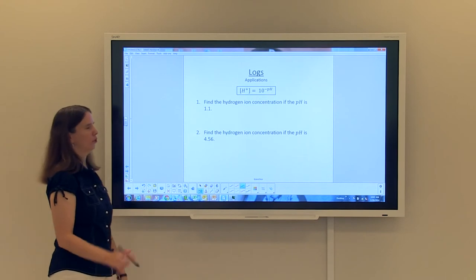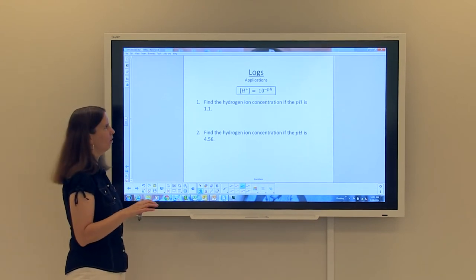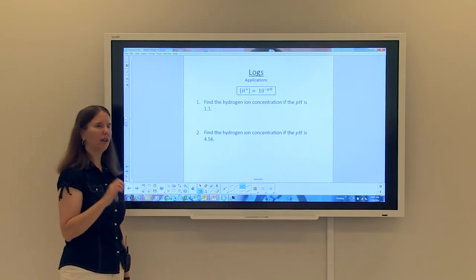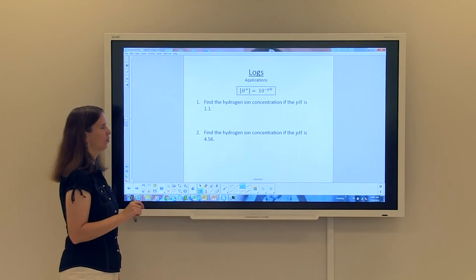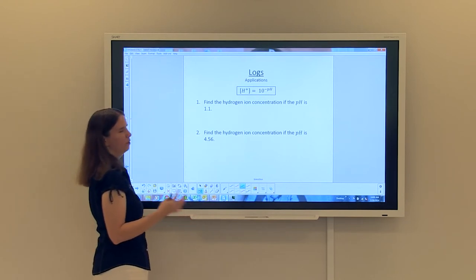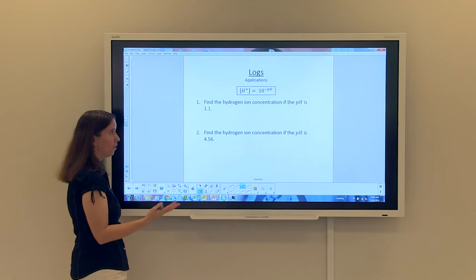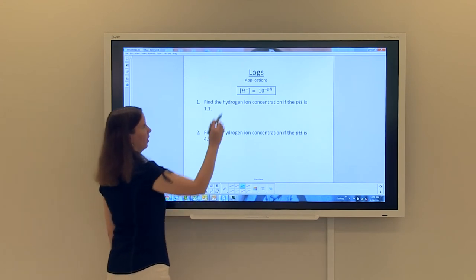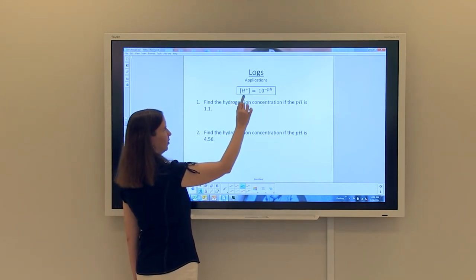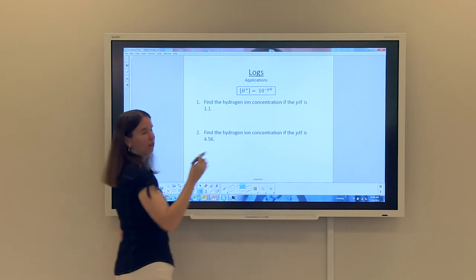So the next set of examples are going to have us going backwards. Instead of finding pH, we're going to be finding the hydrogen ion concentration. And so the formula that we can use, very simple formula that is derived from the last formula that we used, is that the hydrogen ion concentration is simply 10 to the negative pH.